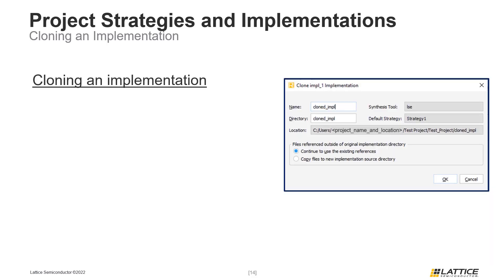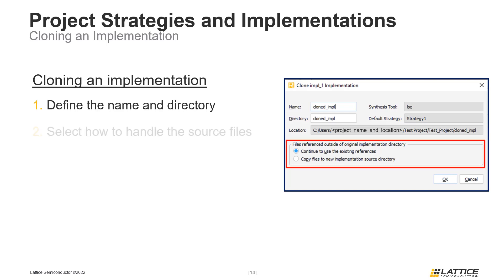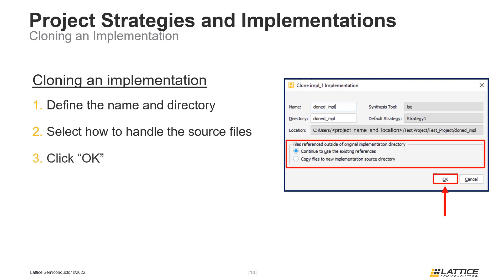The window for cloning an implementation is similar to the one for creating one from scratch. The first step is to define its name and directory. The next step is to select how the source files should be handled: selecting Continue to Use the Existing References will reference files from the source implementation's directory, while selecting Copy Files to New Implementation Source Directory will create copies in the cloned implementation's directory. There are no other configurable options, as the synthesis tool, strategy, and source files will match the source. Click OK to generate the cloned implementation. That concludes the first chapter of the introductory training series.